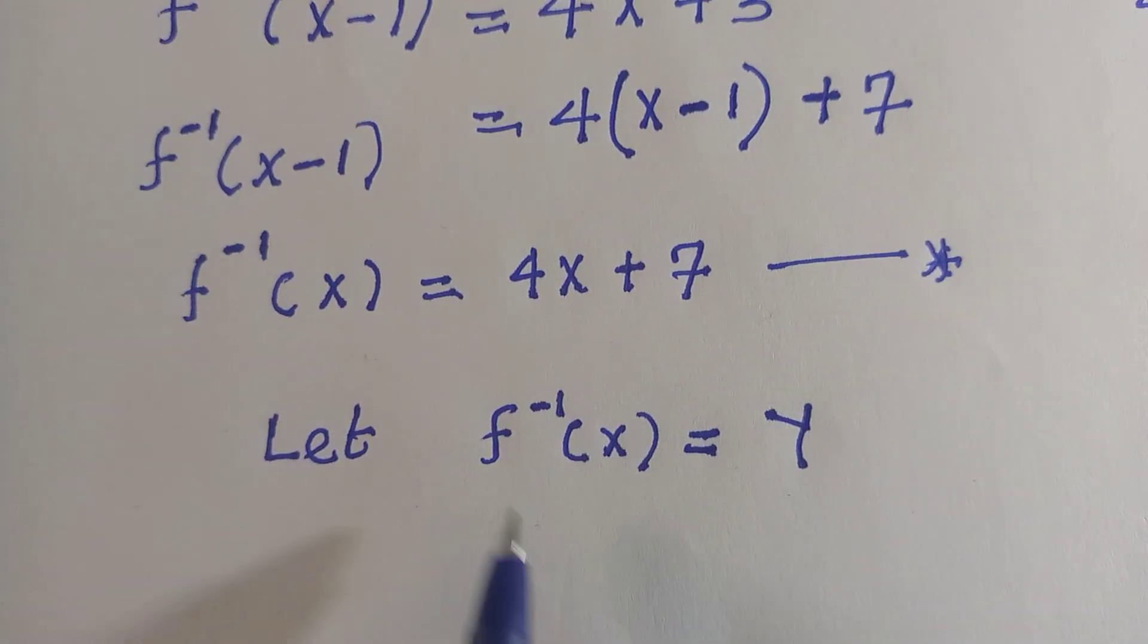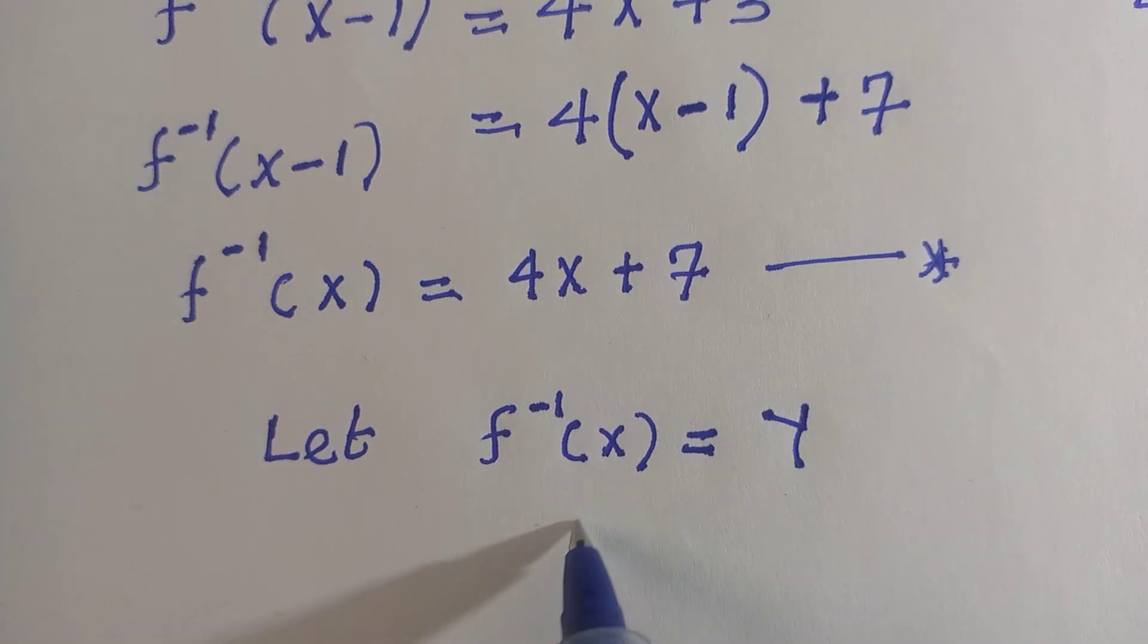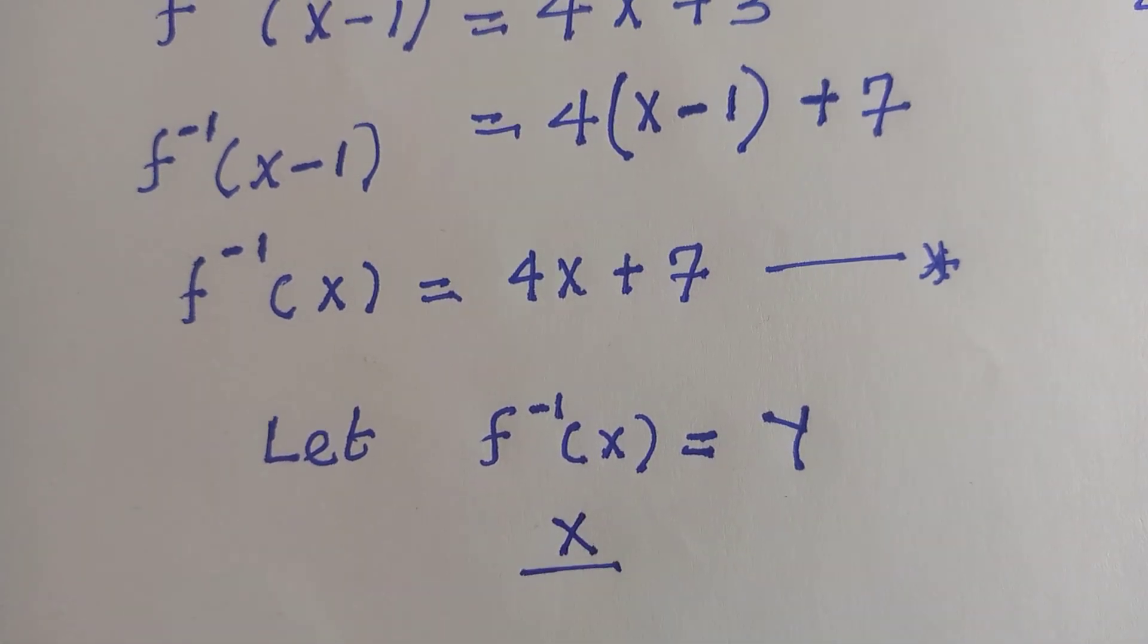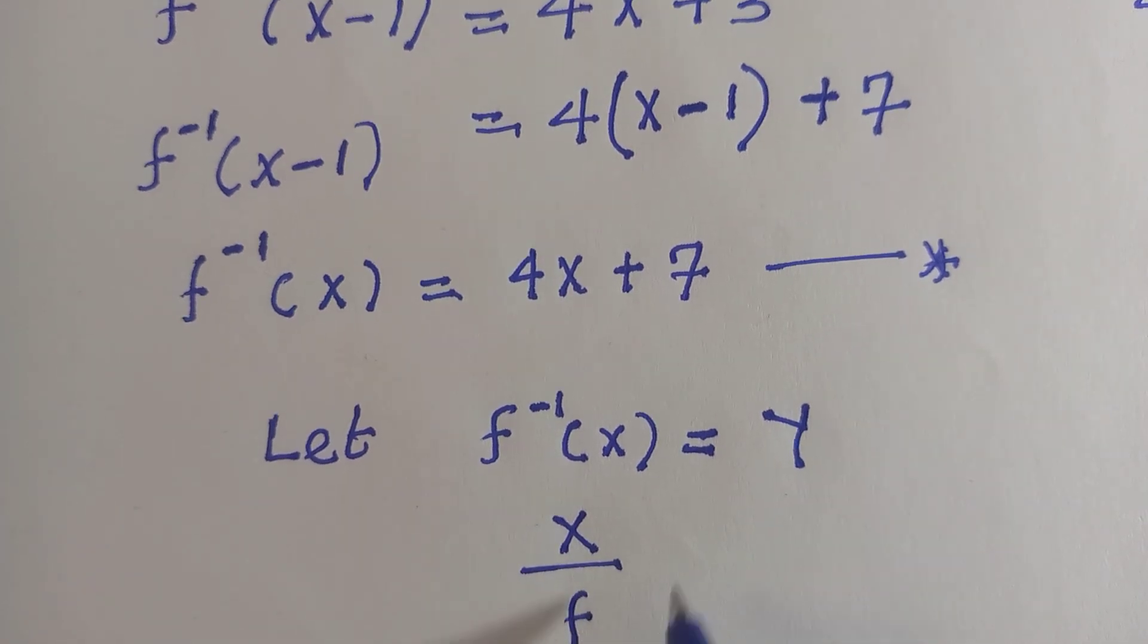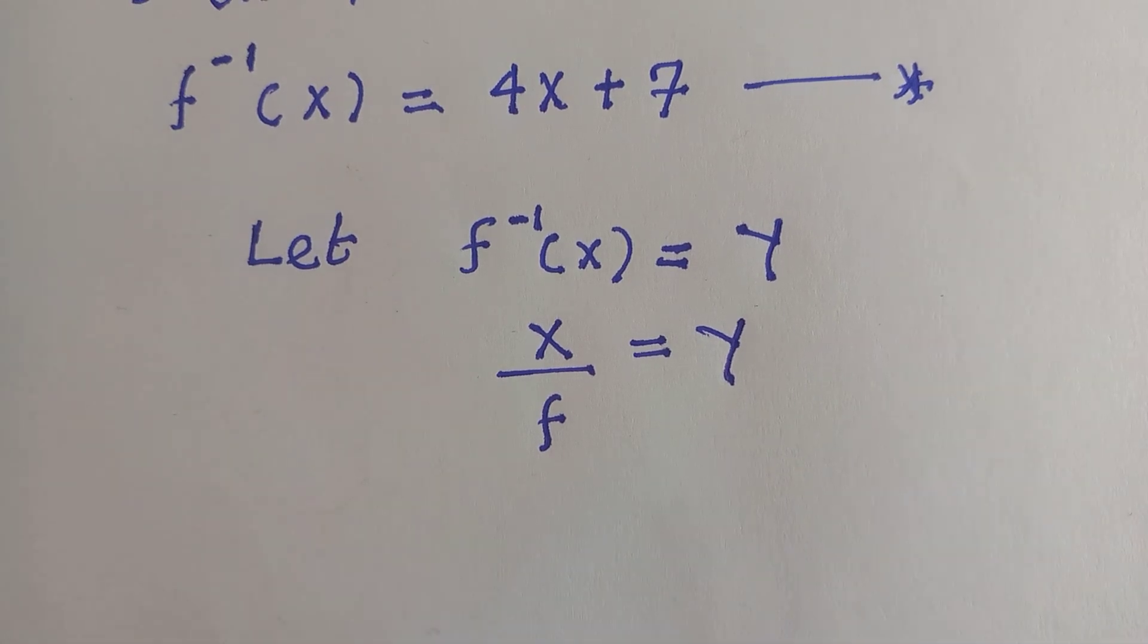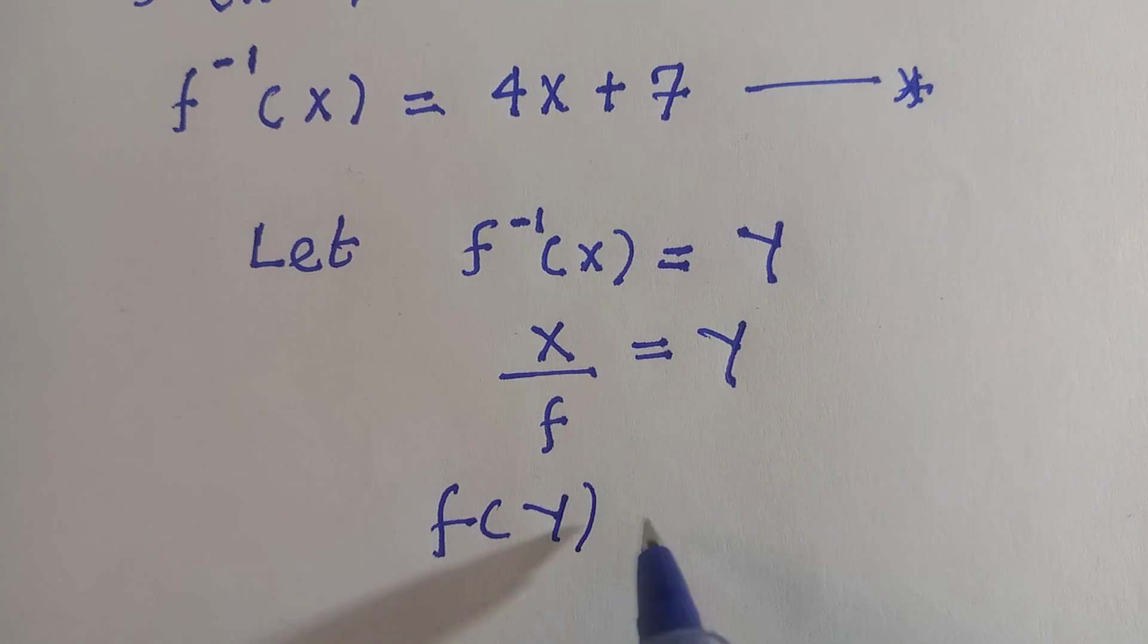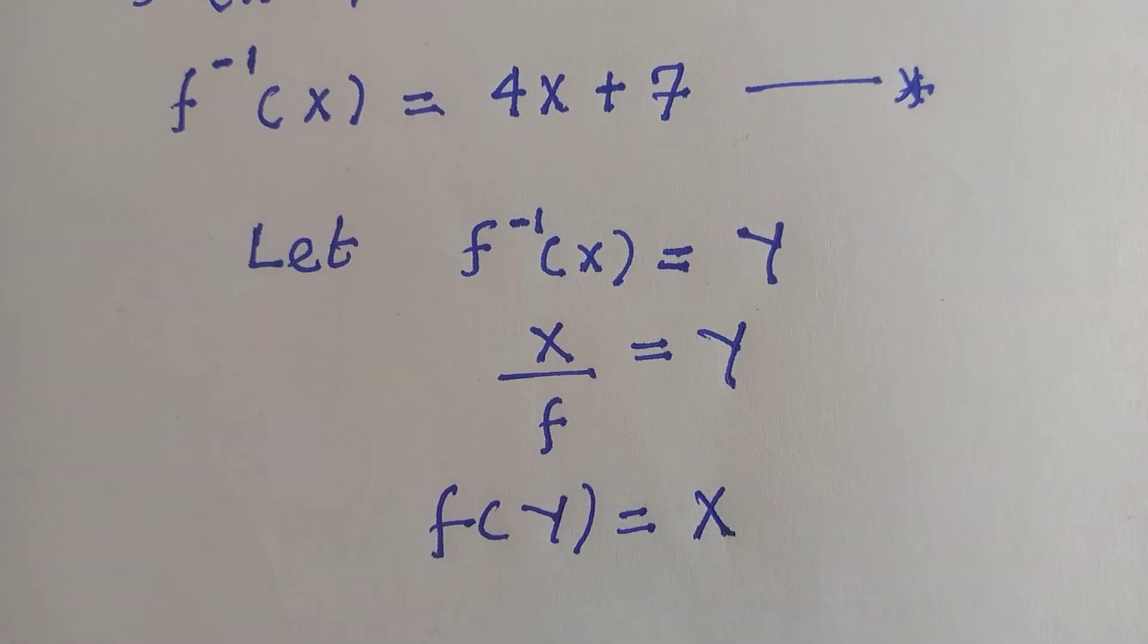And for this f inverse, I will apply the law of indices here and change this to x divided by ordinary f. F equals y, so by multiplying f with y here, we have f of y equals x.